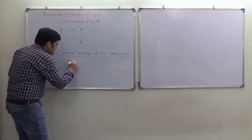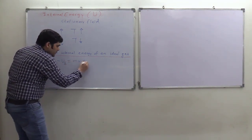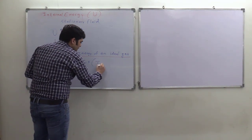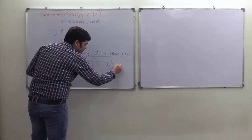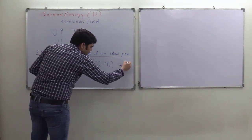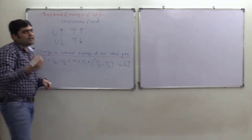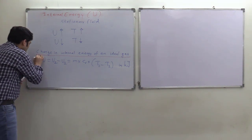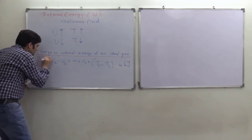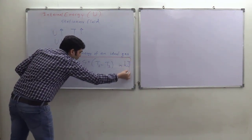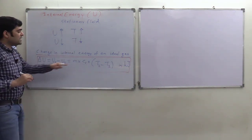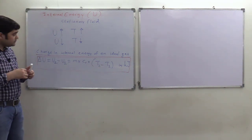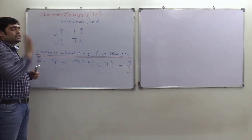For change in internal energy of an ideal gas, we can write the relation as: delta U equals m into Cv into (T2 minus T1). This is a very important relation. Its unit is energy — by default, the unit we are going to use is kilojoule. So the change in internal energy for an ideal gas is m·Cv·(T2 − T1).